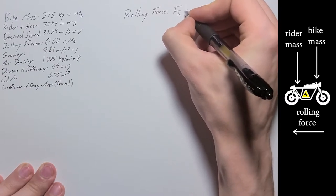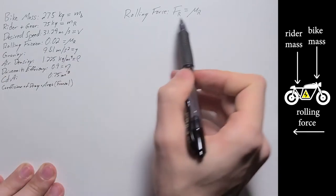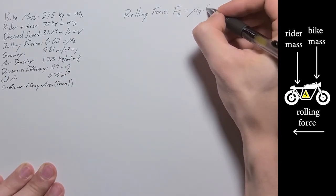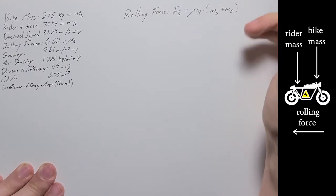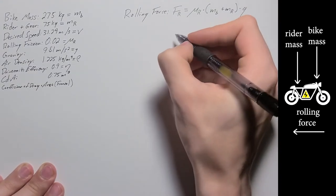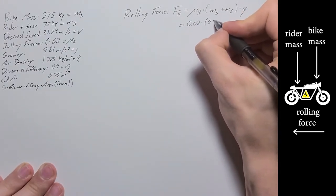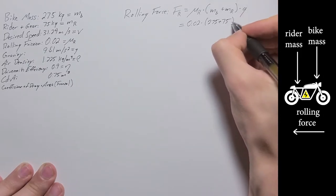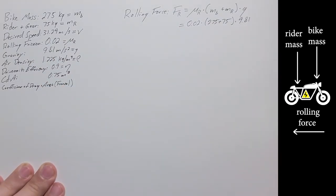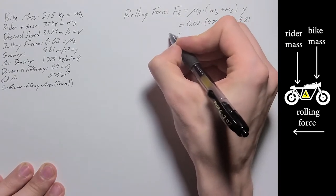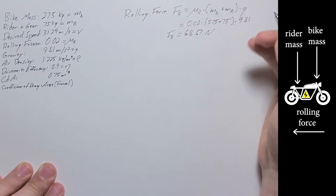How many newtons of rolling force is there going to be based on these parameters? So the rolling force is going to be coefficient of rolling friction times mass of the bike plus mass of the rider. So this is going to be 0.02 times 275 plus 75, that's the two values there, then times gravity.